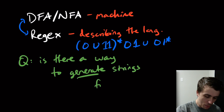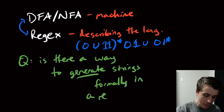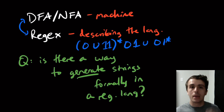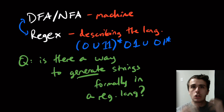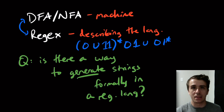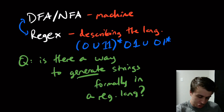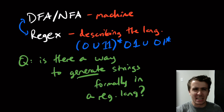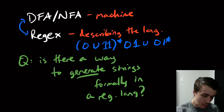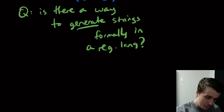The question we want to address is: is there a way to generate strings formally in a regular language? I have a regular language and I want to actually start making strings in the language, so that instead of just describing it or having a machine say yes or no, I can actually see the strings themselves.